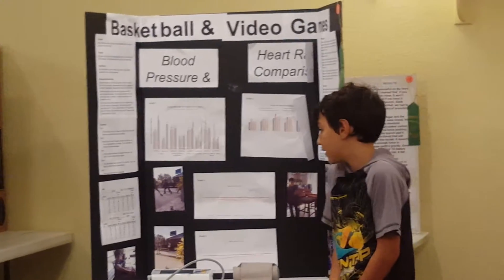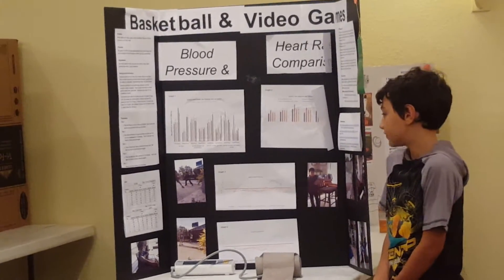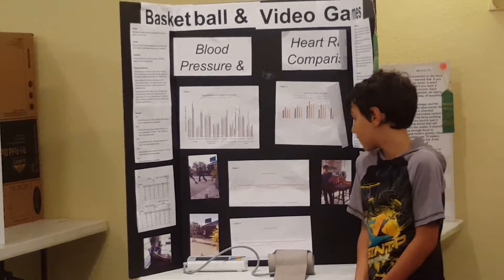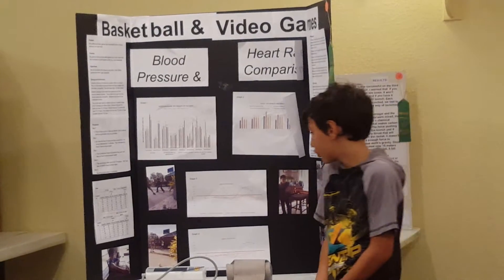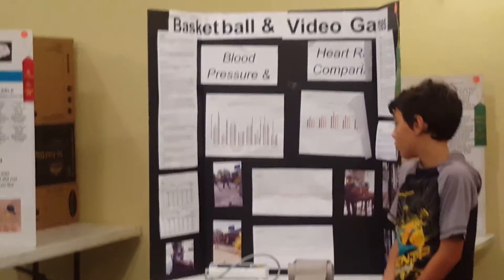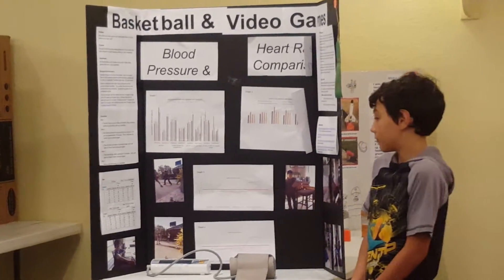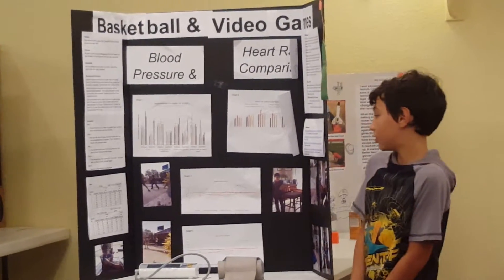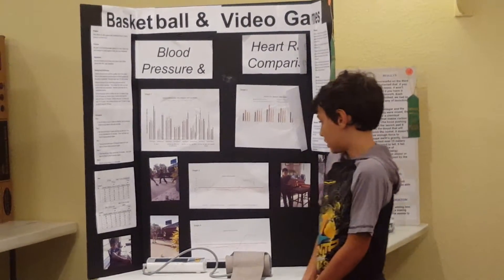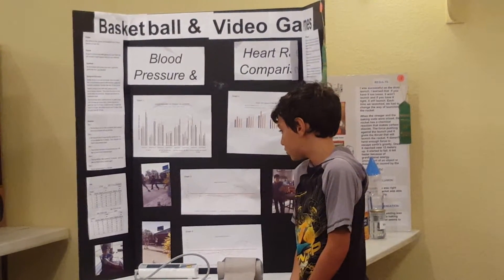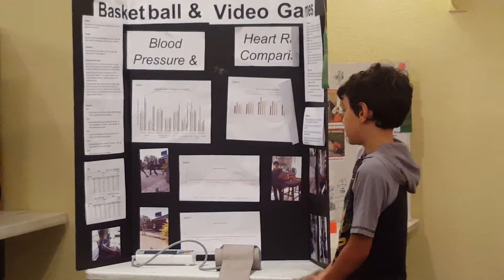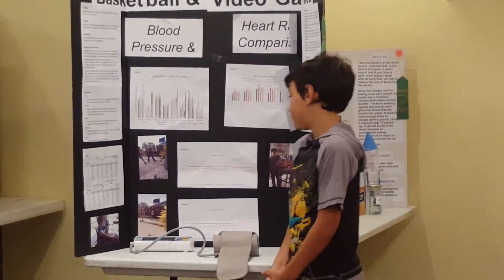Subject 4 had a systolic blood pressure of 94, diastolic of 44, and pulse per minute of 80 at rest. After 10 minutes of basketball, systolic was 132, diastolic was 67, and pulse per minute was 125. Subject 5 at rest had a systolic of 182, diastolic of 134, and pulse per minute of 96. After basketball, systolic was 114, diastolic was 69, and pulse per minute was 125.